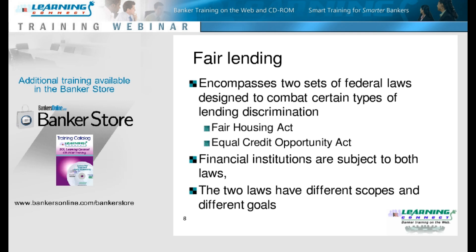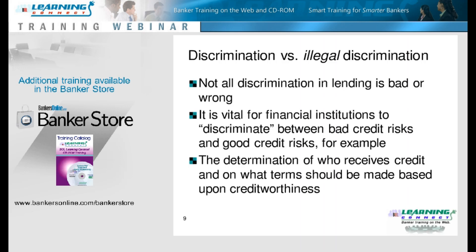When you look at each one of them, you see that they have different scopes. As its name reflects, the Fair Housing Act relates to housing, and the Equal Credit Opportunity Act relates to all different kinds of credit. They also have different types of prohibited bases. The prohibited bases term is one that you hear over and over again.